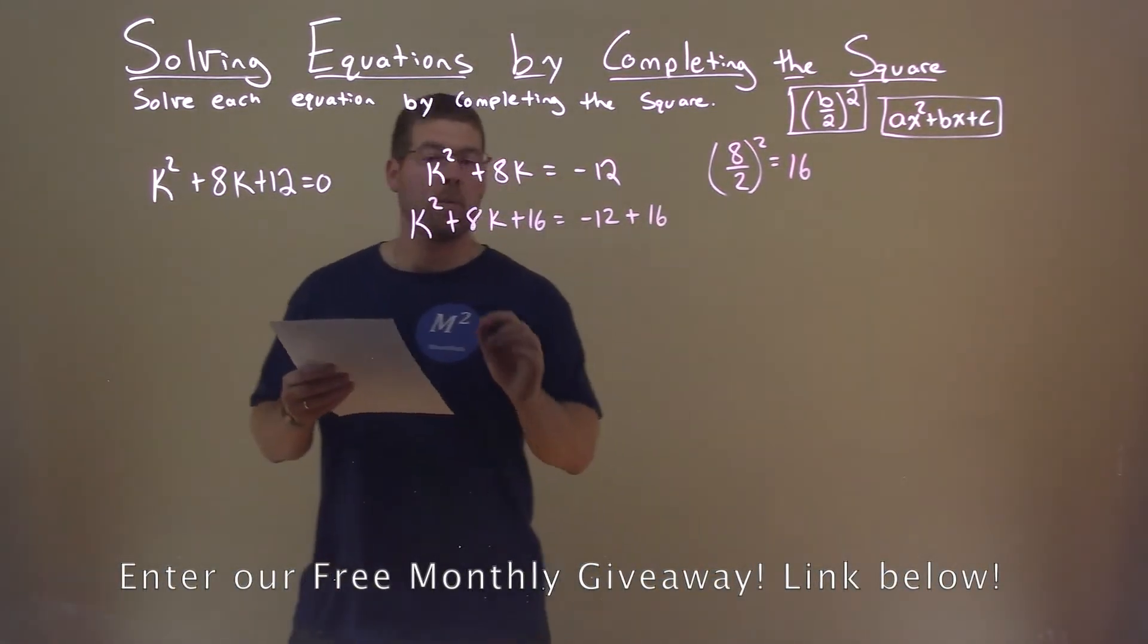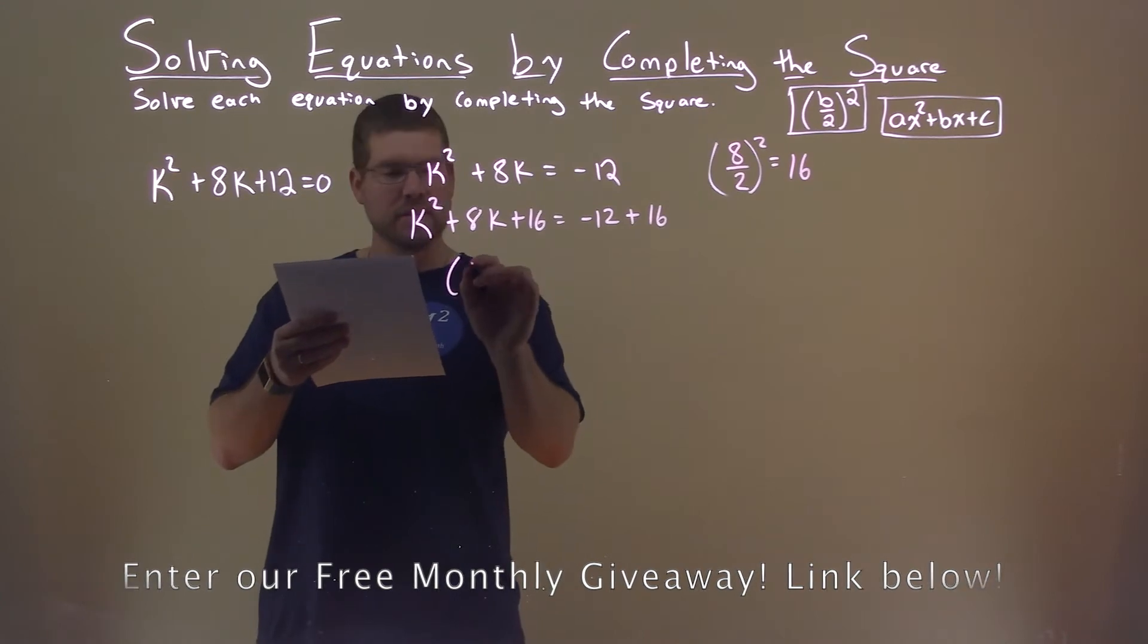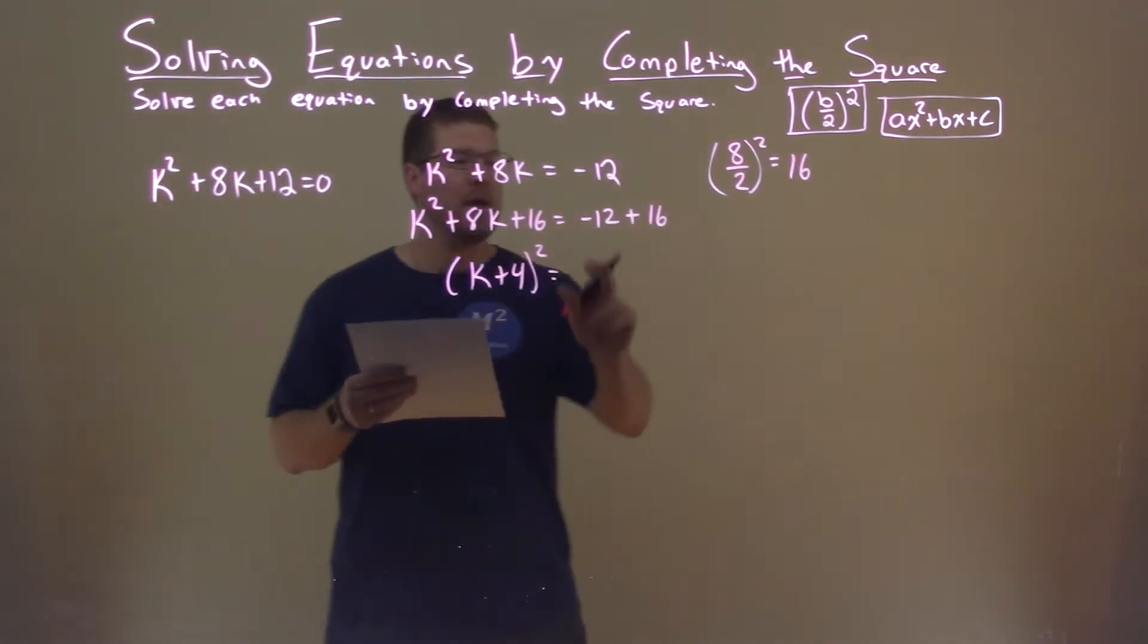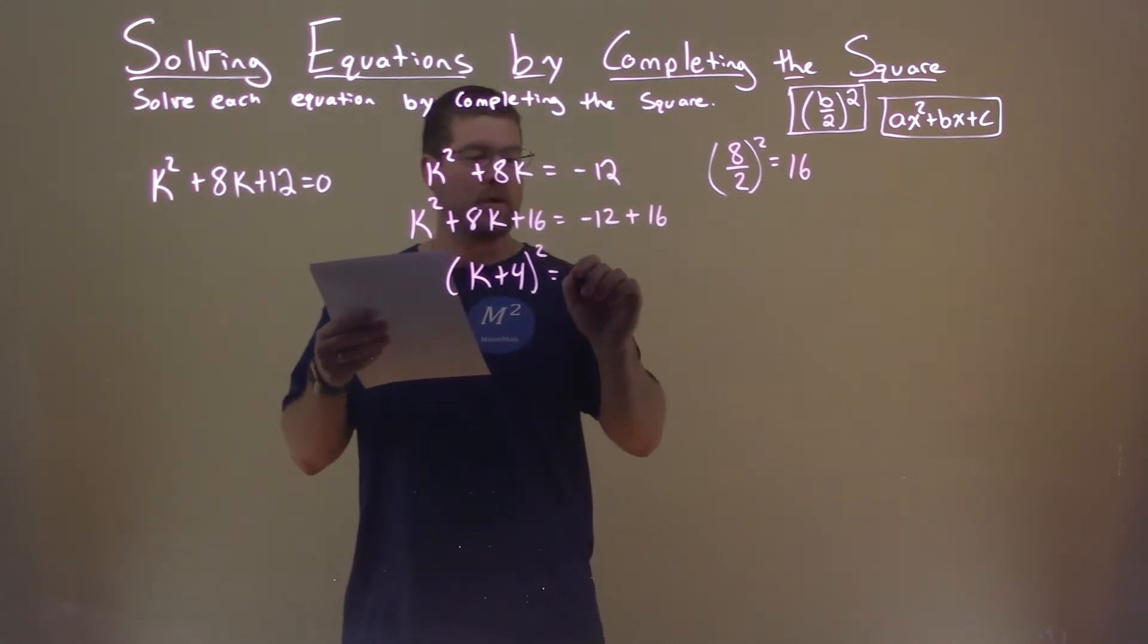The left side is now a perfect square, which is k plus 4, all squared. And negative 12 plus 16, well, that's a positive 4.